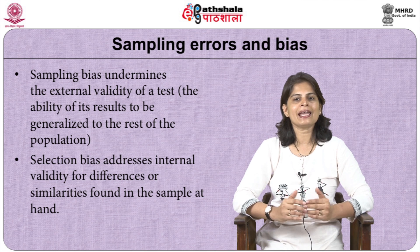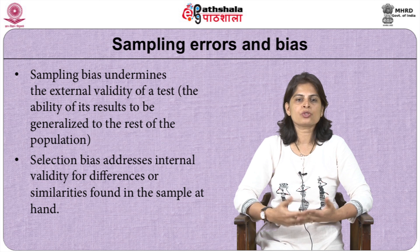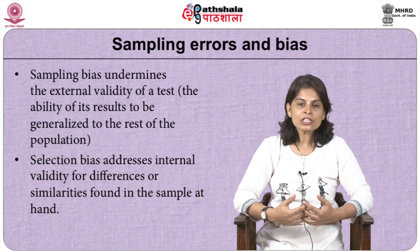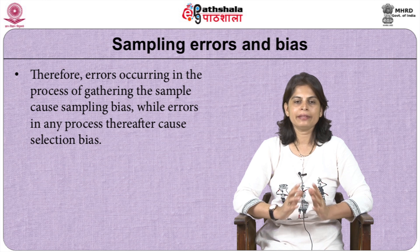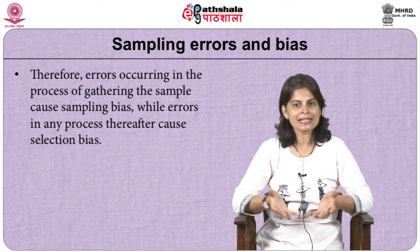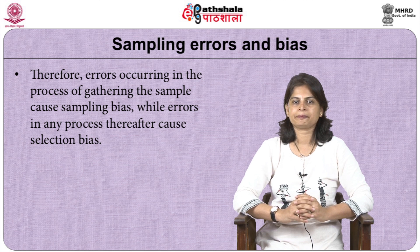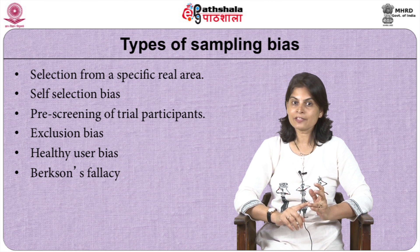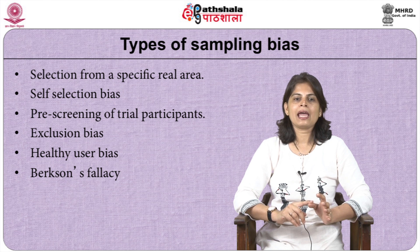Let us come to sampling errors and bias. Sampling bias undermines the external validity of a test — in other words, it undermines the ability of its results to be generalized to the rest of the population. Selection bias, on the other hand, addresses the internal validity for differences or similarities found in the sample at hand. Errors in the process of gathering the sample cause sampling bias, while errors in the process thereafter cause selection bias. Types of sampling bias include: selection from a specific area, self-selection bias, pre-screening of trial participants, exclusion bias, healthy user bias, and Berkson's fallacy.